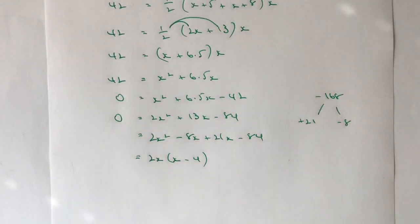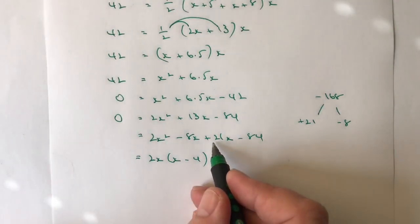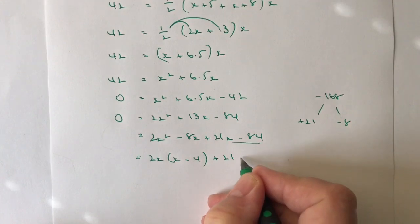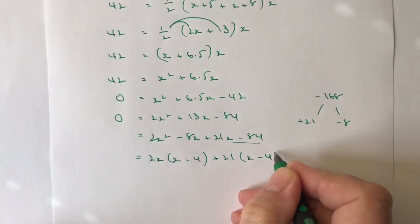If I look at the second two terms, which are these two terms here, I can factorize that for plus 21. And I get x minus 4 again.